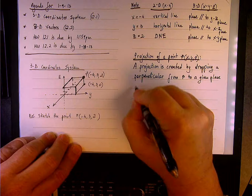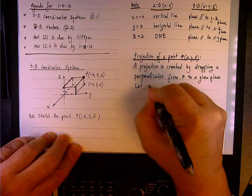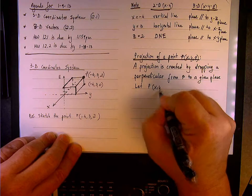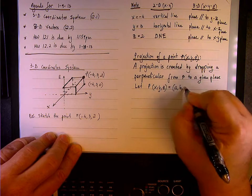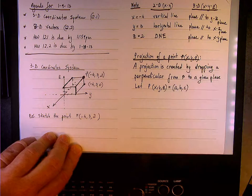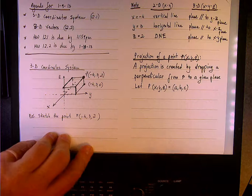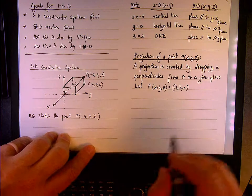So for instance, let's work specifically. Let P of x, y, z equal A, B, C. So x equals A, y equals B, z equals C, and so on.